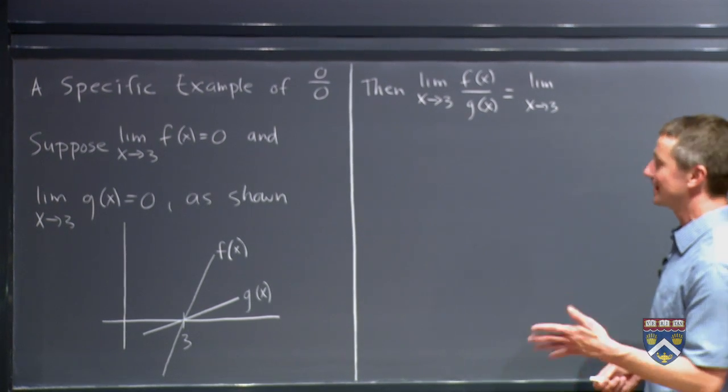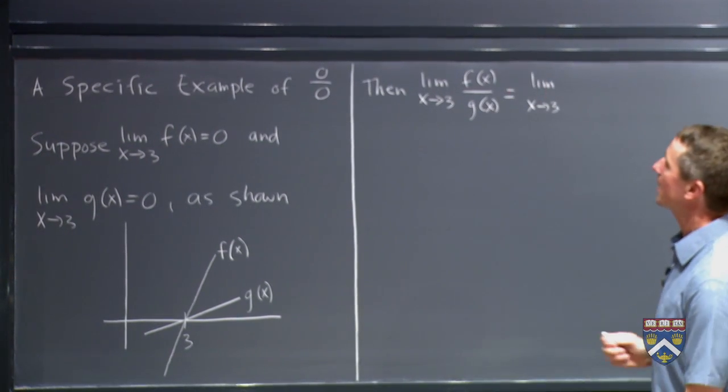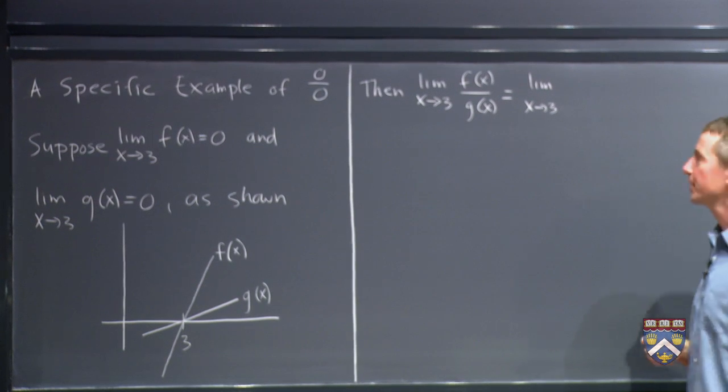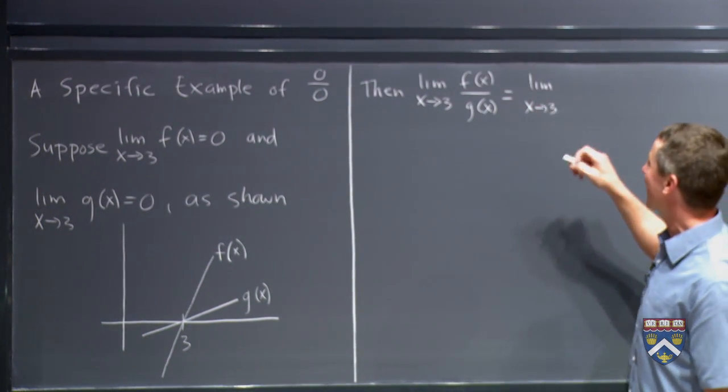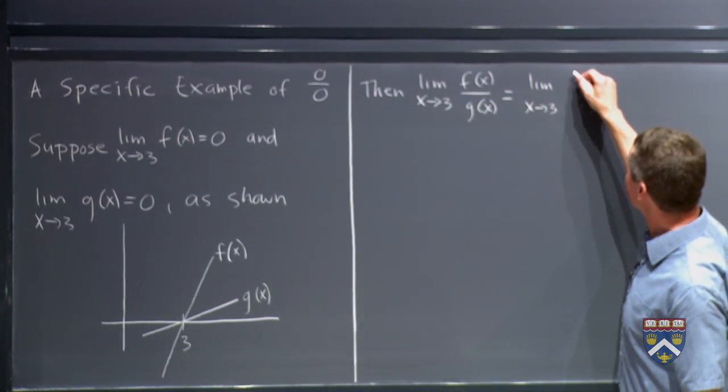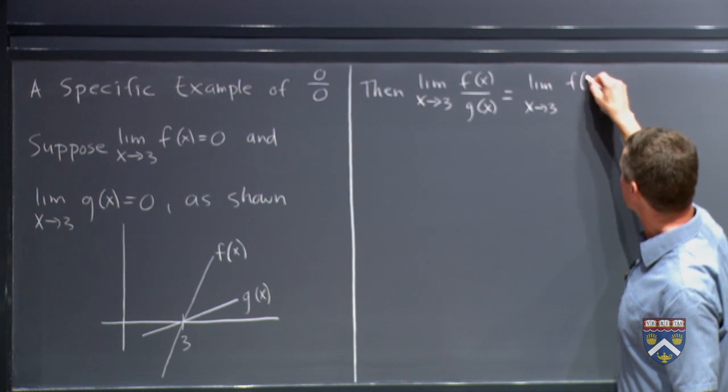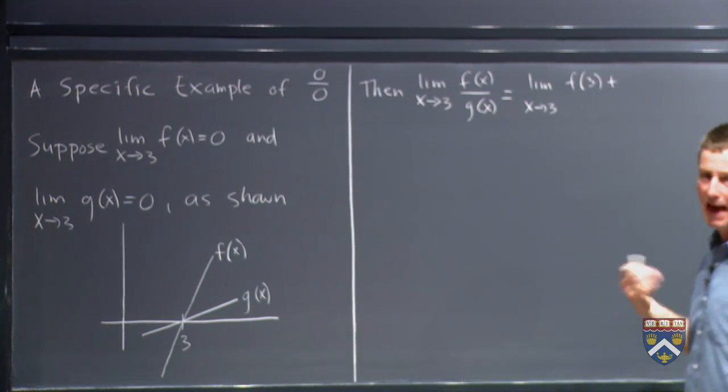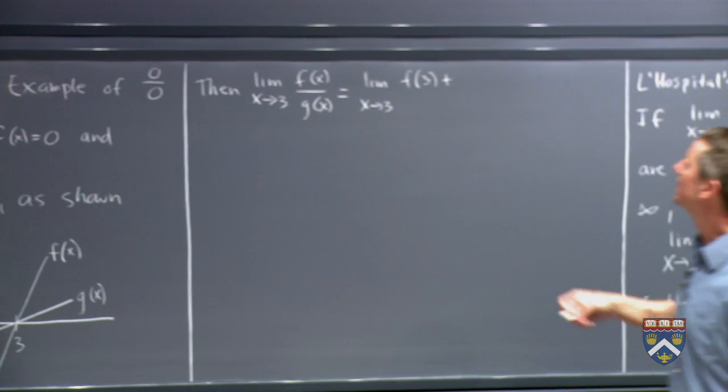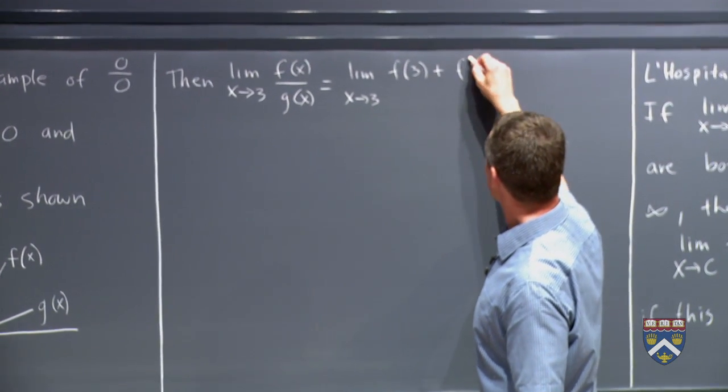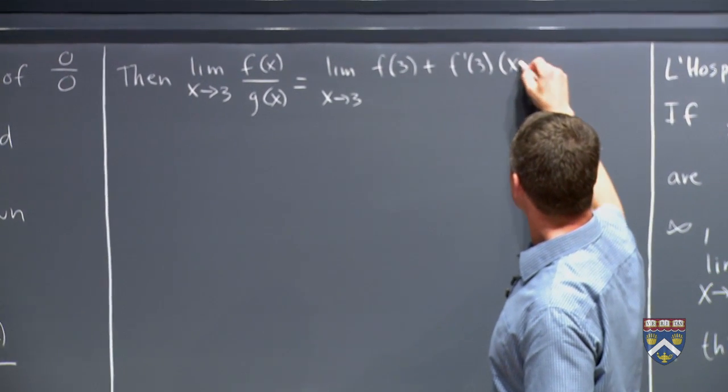So this is going to be essentially a perfect approximation. So what would the linear approximation be, the local linearization of f(x) near x equals 3? It's just that same formula that we used there. It's f(a), and here a is 3, plus f'(a) times (x - a).